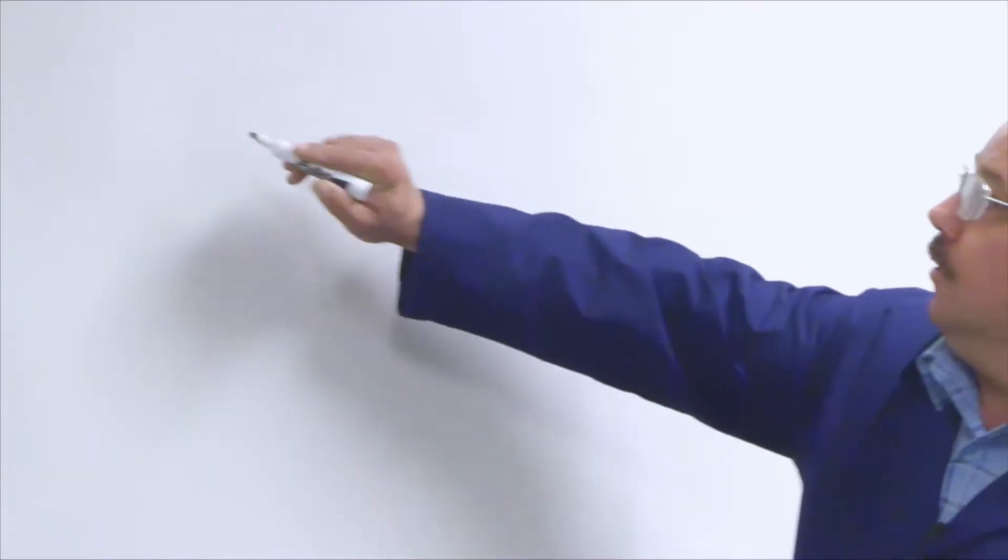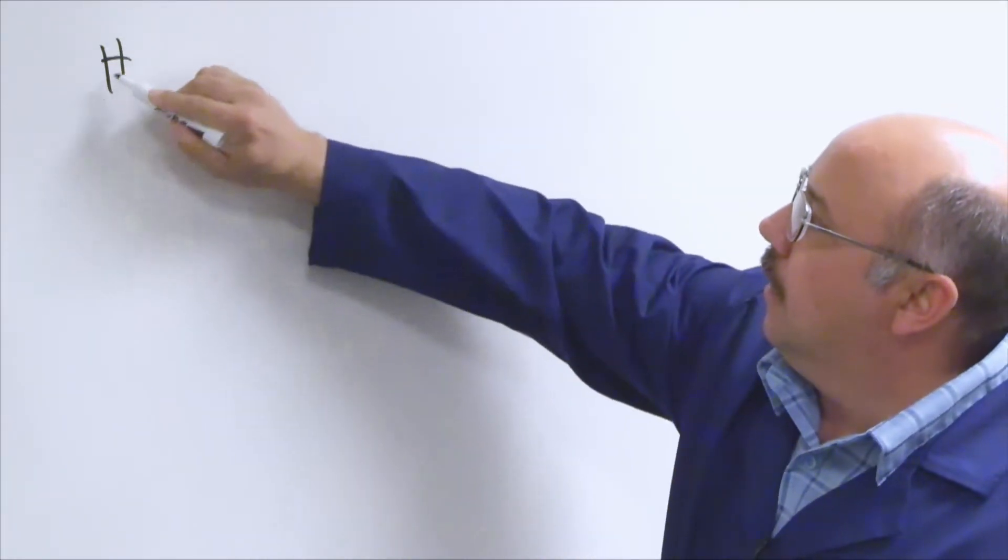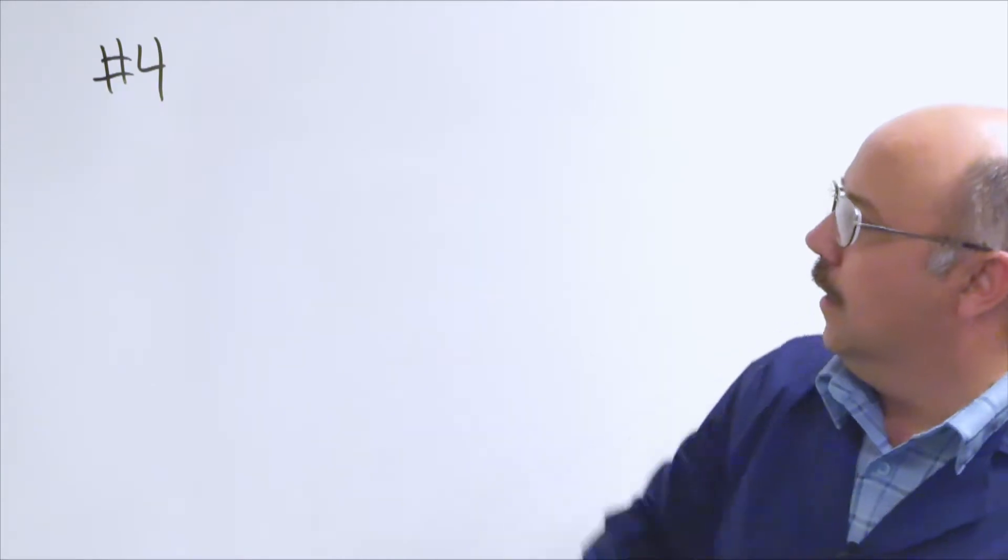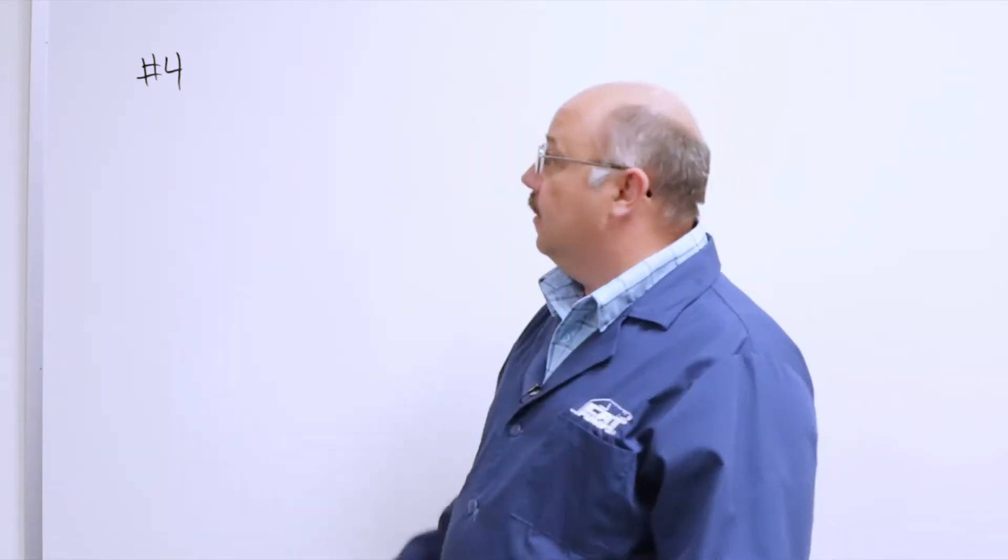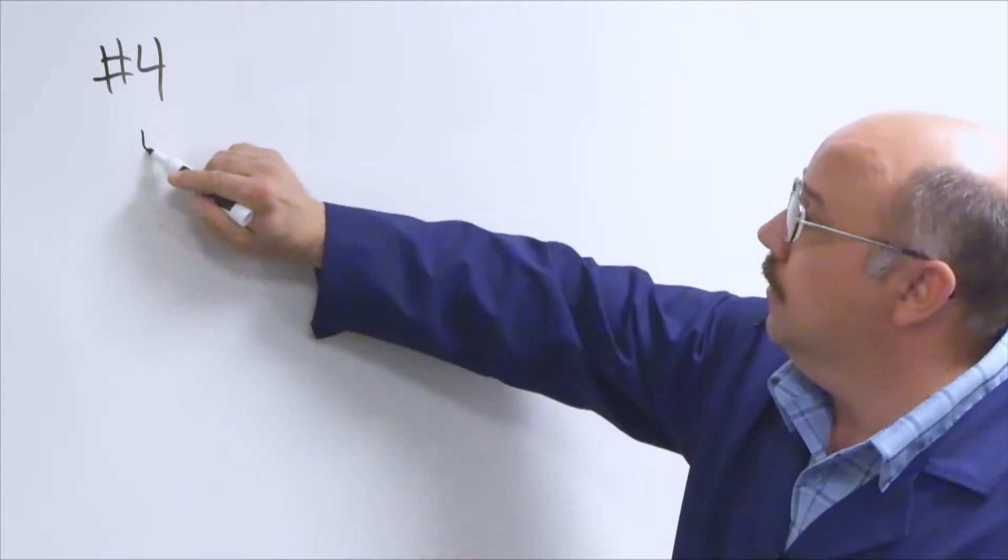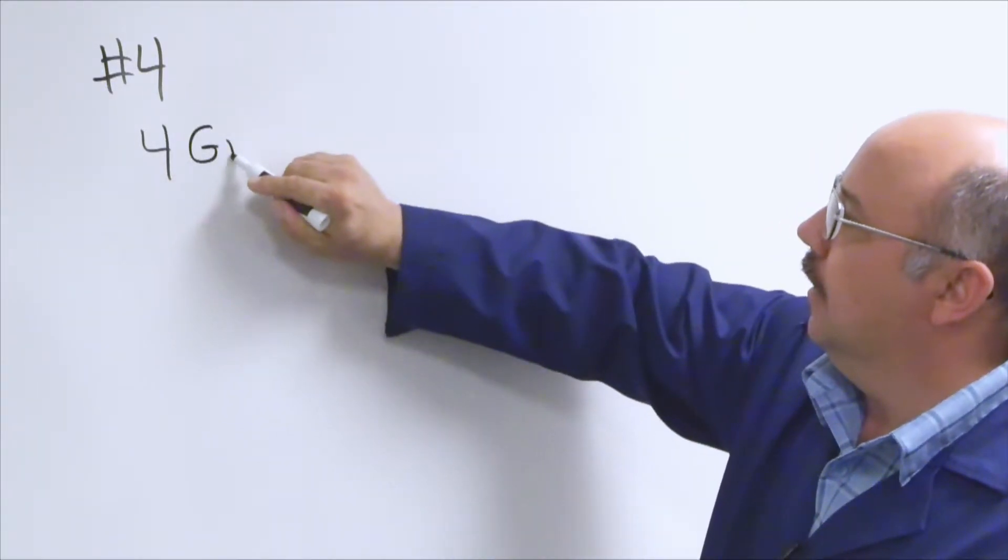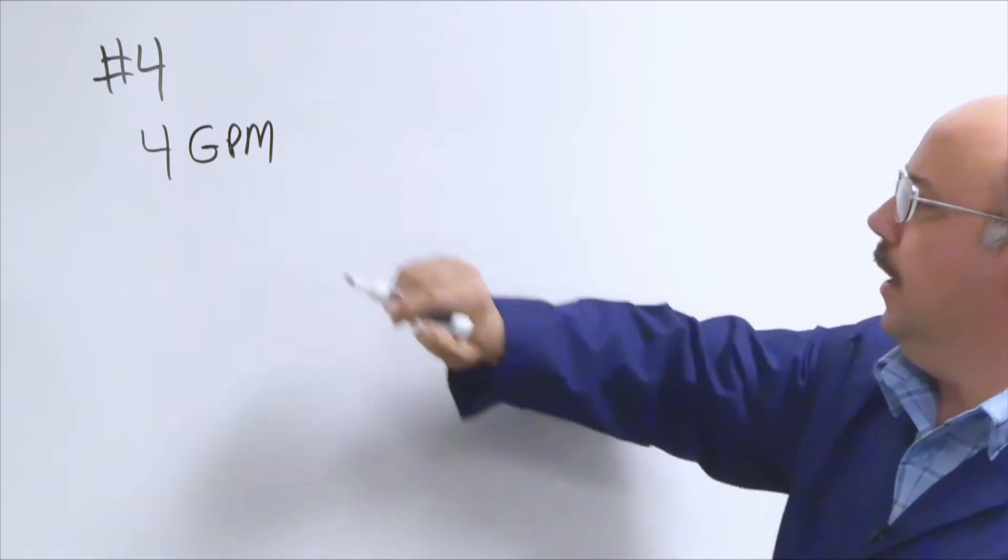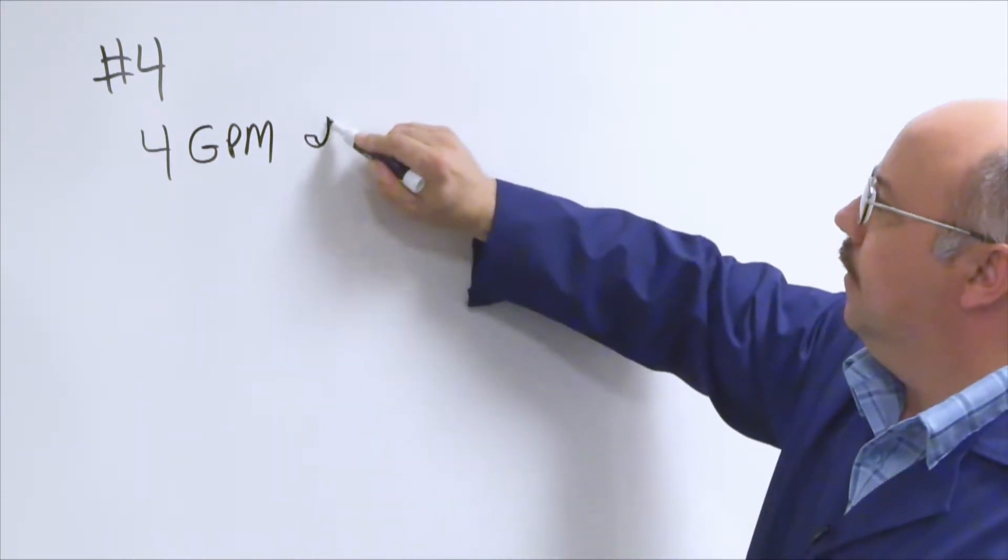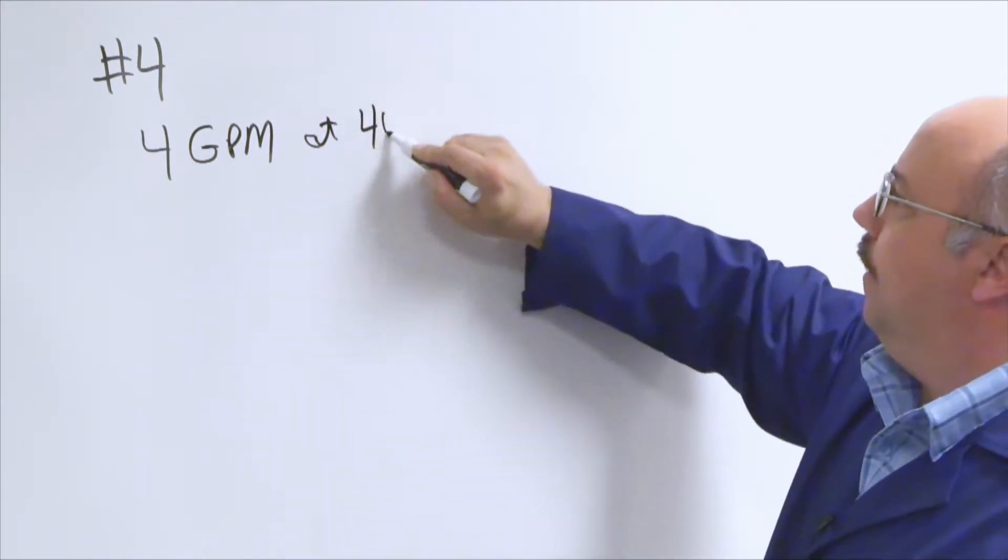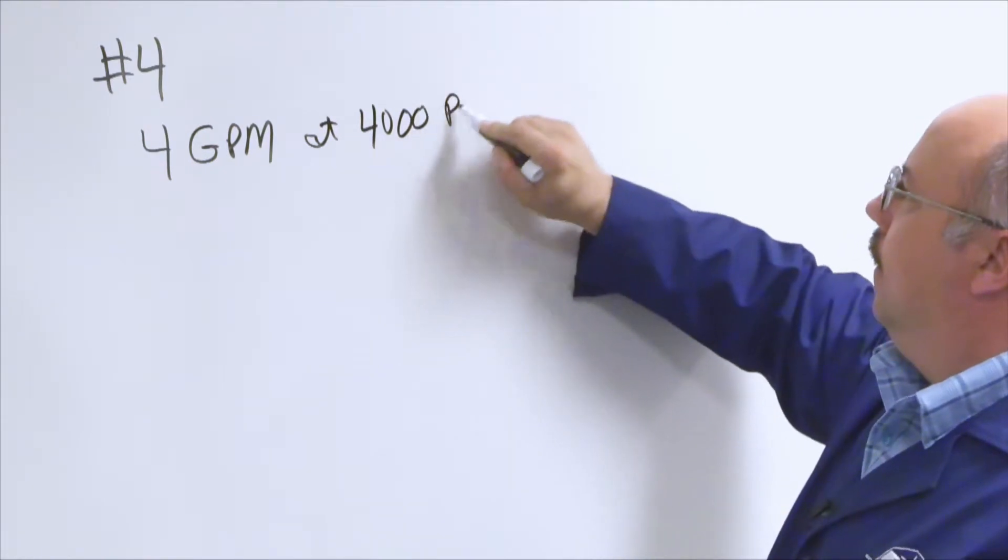Next, we're going to talk about nozzle sizing. Each nozzle has a size or a number associated with it. First thing I'm going to throw up here is a number four nozzle. What does that number represent? It represents the flow through the nozzle in gallons per minute (GPM) at 4,000 psi.